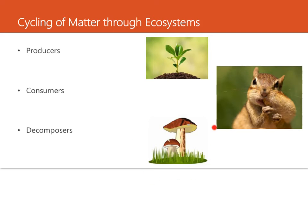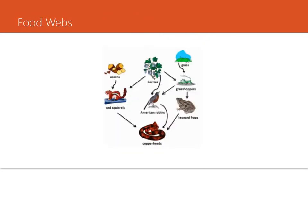Then you have decomposers, like this mushroom here. They help keep the environment clean and recycle earth's materials by breaking down the wastes and remains of dead plants and animals. Through this process, matter is converted back to water and nutrients in the form of small, simple particles. These nutrients are returned to the soil and atmosphere where producers can use them to begin new matter cycling. Examples of decomposers include worms, bacteria, some insects, and fungi.